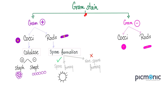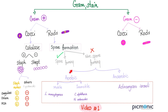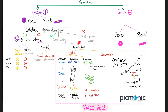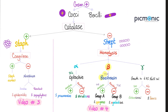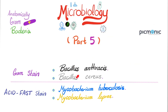Let's review previous videos. Gram-positives include cocci and rods. Cocci are either catalase-positive (staph) or catalase-negative (strep). Gram-positive rods are either spore-forming or non-spore-forming, and aerobic or anaerobic. Clostridia were covered in video two; Staph aureus, epidermidis, and saprophyticus in video three; streptococci in video four; Bacillus anthracis, Bacillus cereus, Mycobacterium tuberculosis, and Mycobacterium leprae in video five.